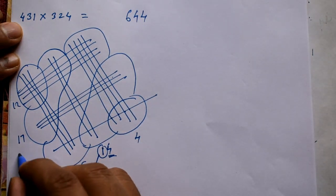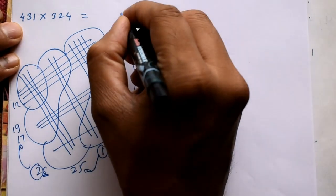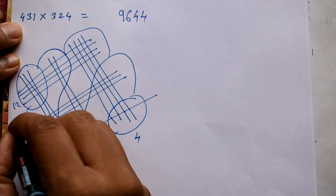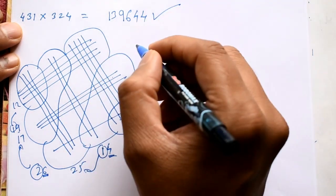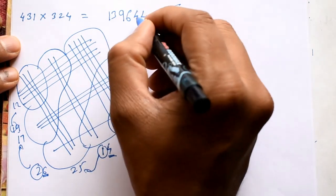2 is remaining. Add it to 17, that is 19. This is 9. 1 is remaining. And add it, that is 13. Now this is the correct answer. You can check also in calculator, you get same answer.